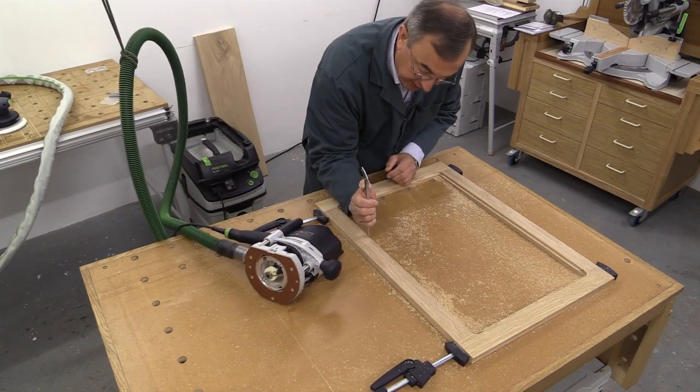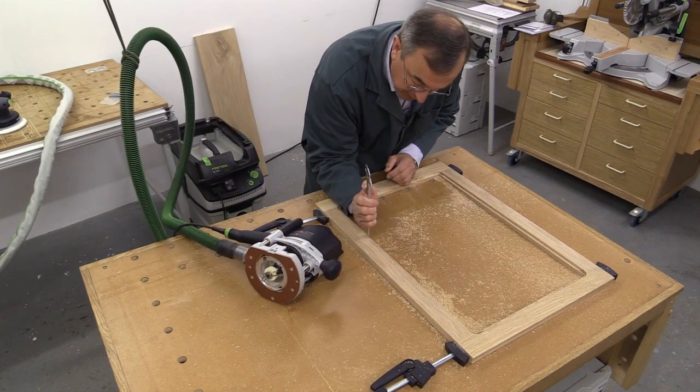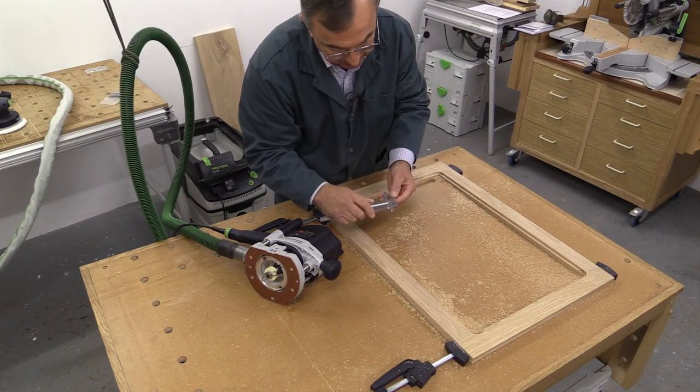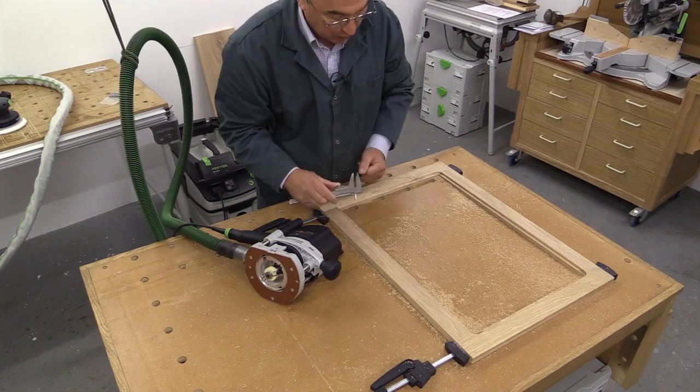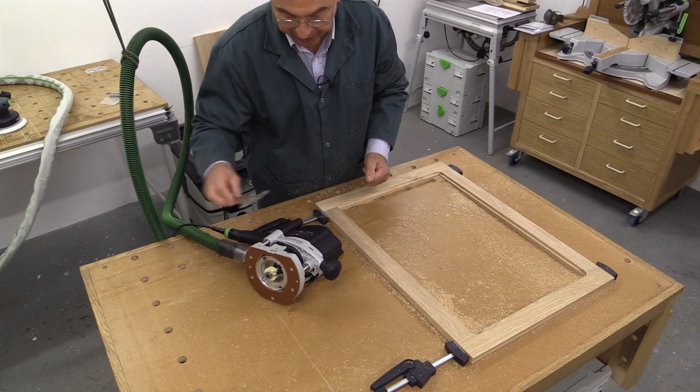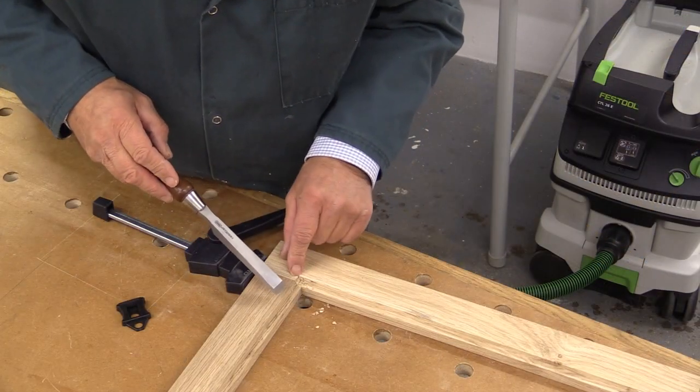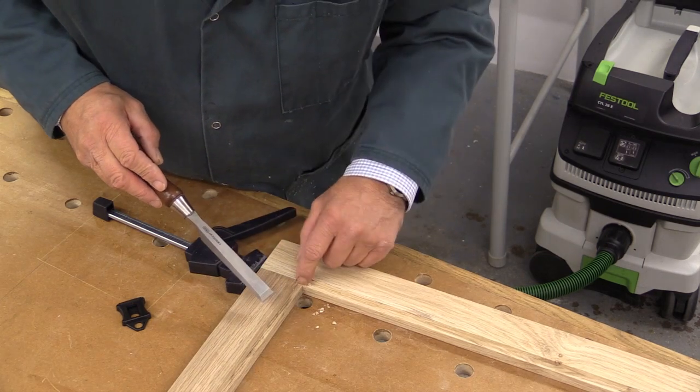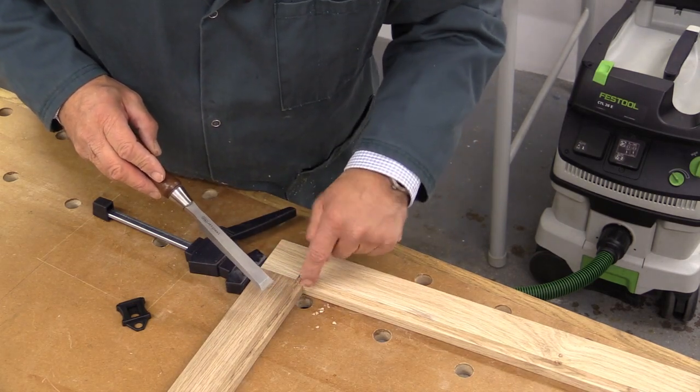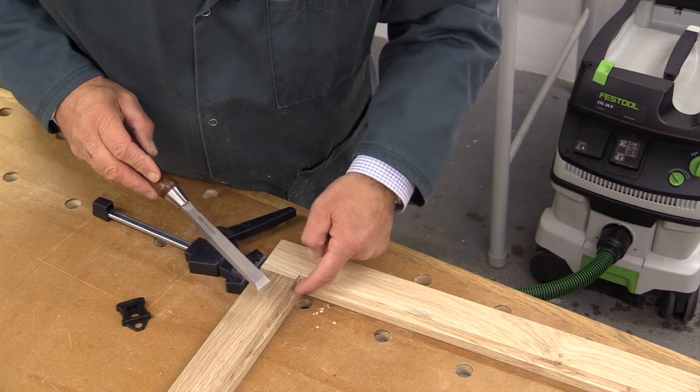And I'll just check that for depth and that's seven millimeters and that's one millimeter deeper than the picture is thick so that's perfect. Now when you're cleaning up these corners try to avoid doing anything that might possibly damage the nice clean edge which you've already established here.